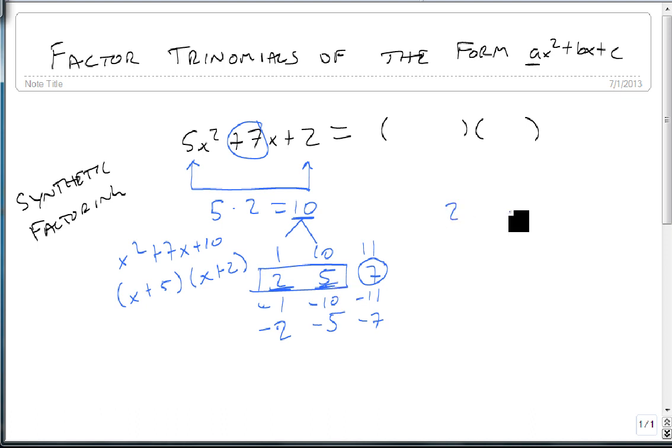We take our winning combination, the 2 and the 5, and we grab that first number 5, and we divide both of our factors by it. 2 over 5 and 5 over 5. Then we reduce our fraction. 5 over 5 becomes 1 over 1.